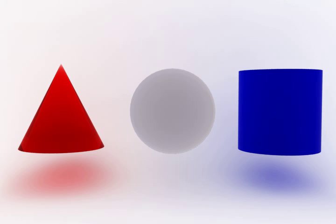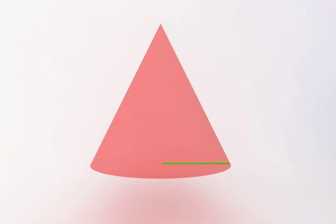Archimedes was perhaps the greatest mathematician to have ever lived. Over 2,200 years ago, he derived the volumes of these objects and discovered a special relationship between them. He started with a simple cone,